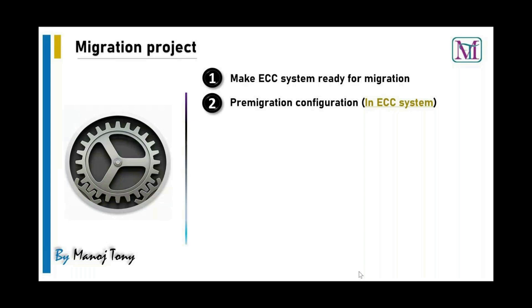For pre-migration configuration, the first step is to take all account groups and number intervals of the customer master from tables KNA1. Second, we configure the activation of BP. Then we define BP roles, define BP number ranges, assign customer account groups to BP groupings, assign customer account groups to BP roles, and configure BP for the direction customer to BP.